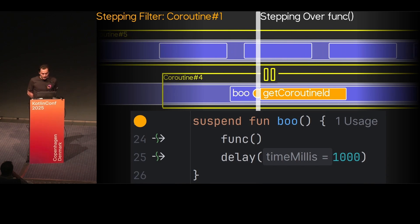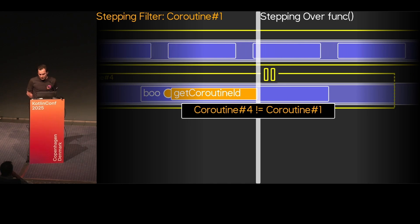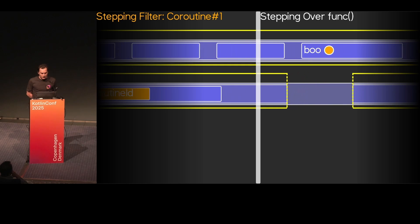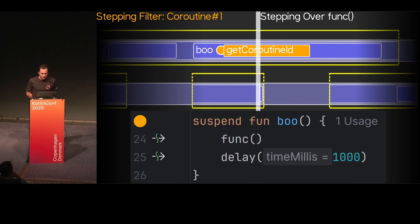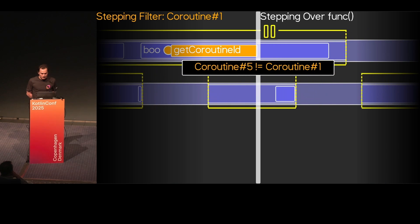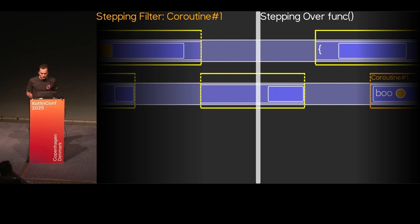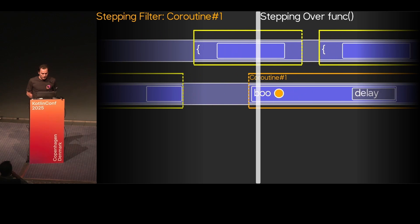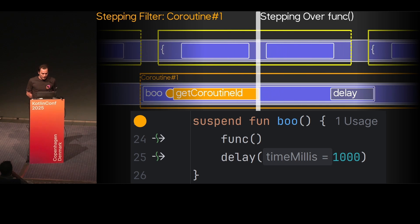If it is another coroutine — like coroutine number four — it's not ours, so we skip it and continue executing. Again another coroutine, not ours, we resume. And eventually, after some time, we will meet our point — yes, it's our coroutine, it's the resuming point — so we pause here.